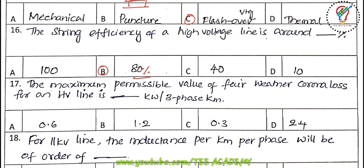Seventeenth question: the maximum permissible value of fair-weather corona losses for a high-voltage line is how many kilowatts per three-phase per kilometer? The options are 0.6, 1.2, 0.3, and 2.4. The correct answer is 2.4 kilowatts per three-phase kilometers.